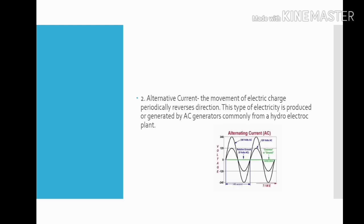Number 2, Alternating Current. The movement of electric charge periodically reverses direction. This type of electricity is produced or generated by AC generators, commonly from a hydro-electric plant. Here is the example picture of alternating current.